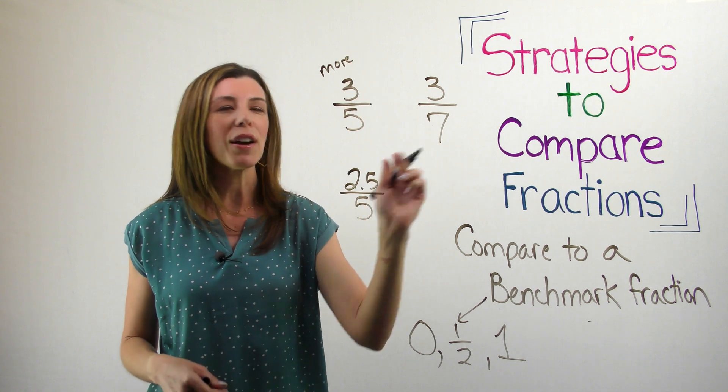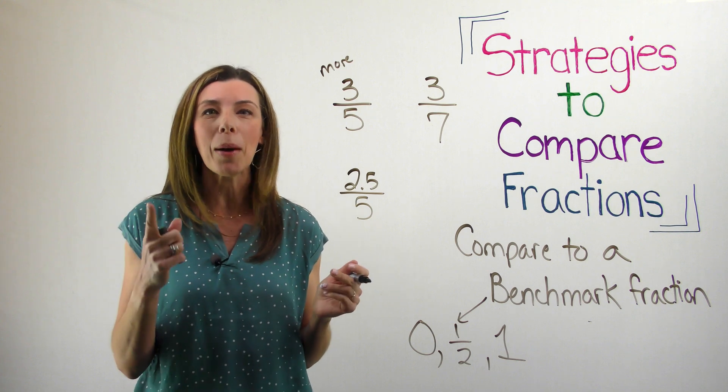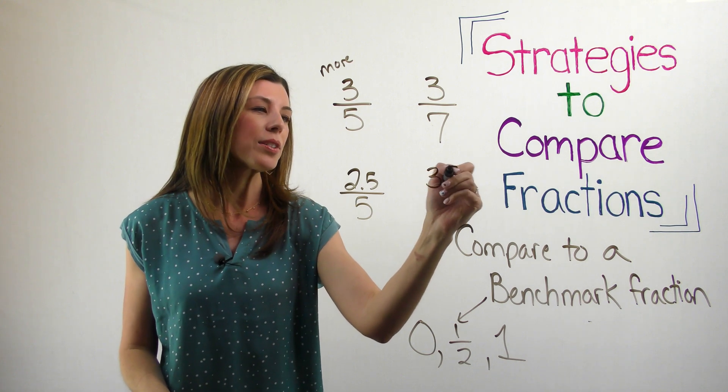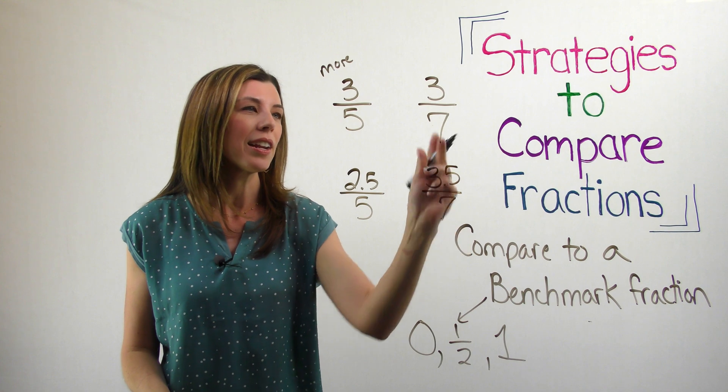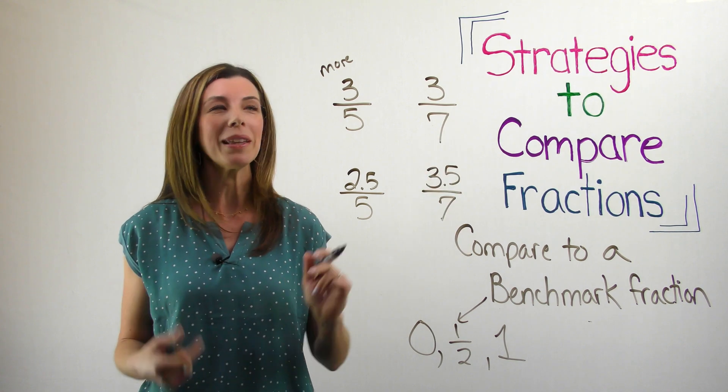Now let's look at this fraction right here. What would be half of seven? And again, if you're like, I don't know what half of seven is, think about money. So I know that $3.50 is half of seven. Is this more than one-half or less than one-half? It would be less.